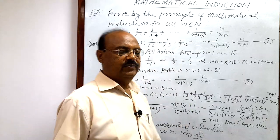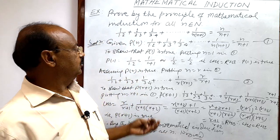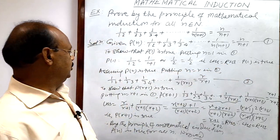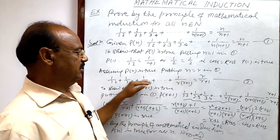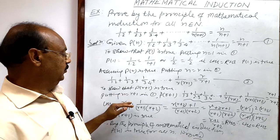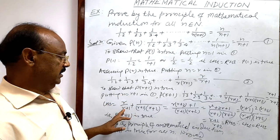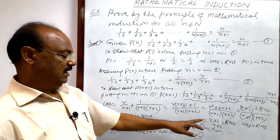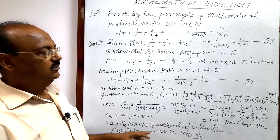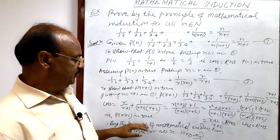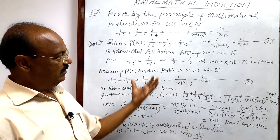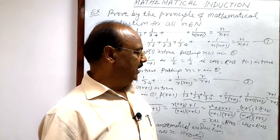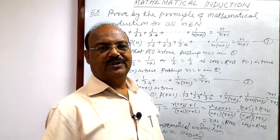To summarize, there are only three steps: first, we showed P(1) is true; second, we assumed P(r) is true; and third, we showed P(r+1) is true. After proving P(r+1) is true, we write the concluding statement. The solution is complete — a very simple and interesting proof. We will see more problems in other videos. Thank you very much.